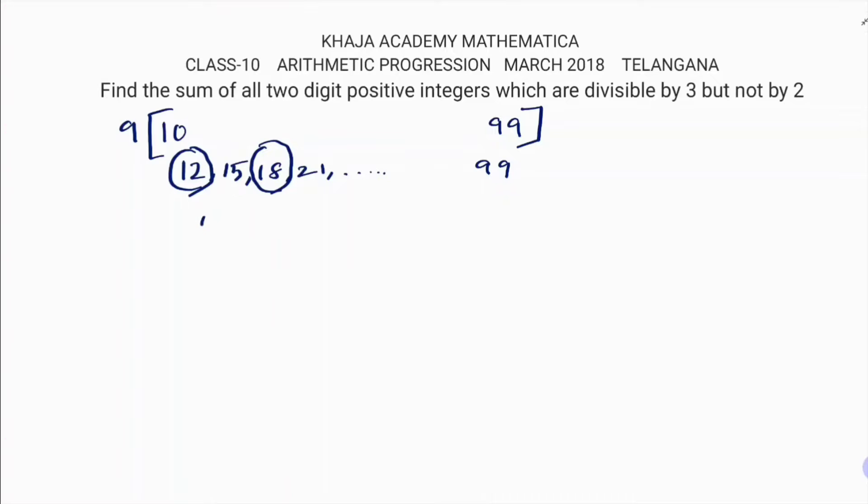So your series will be 15, 21, next you'll get 27 and so on, and the last number you can take is 99 because it is an odd multiple. So odd multiples of 3 you can take. Even numbers you cannot take because they want numbers not divisible by 2. So this is the series: 15, 21, 27, up to 99.